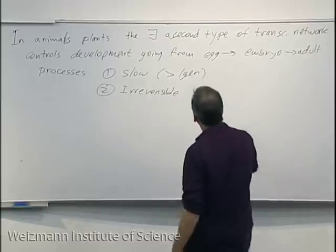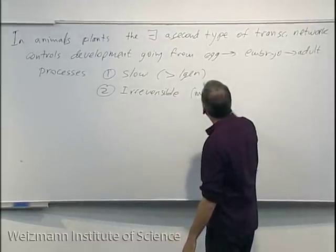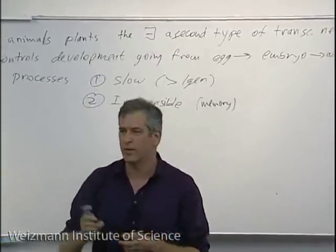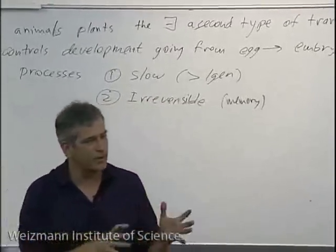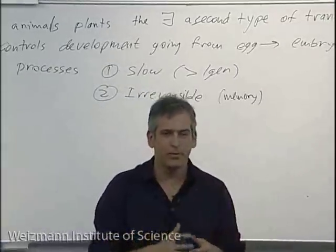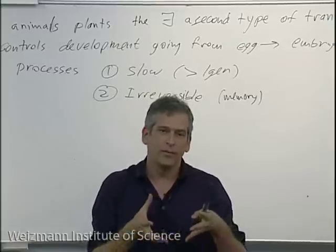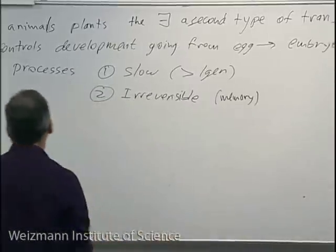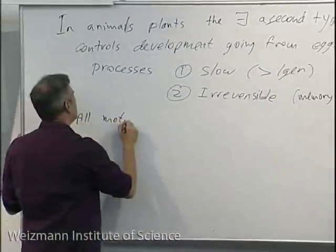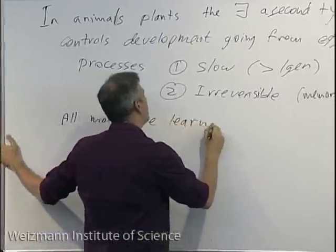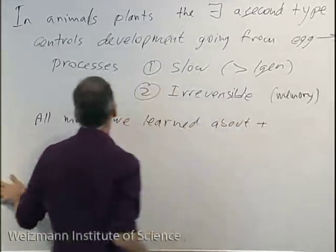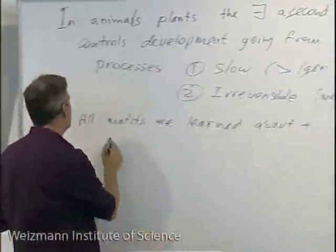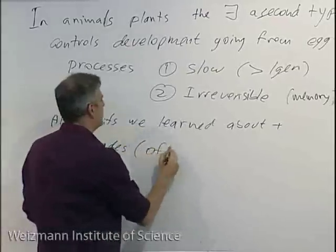Which proteins to express is governed largely by developmental transcription networks. A muscle cell starts developing and must remember 'I'm a muscle' across many cell generations — that's memory — and it's slow and irreversible. These networks need memory. When you look at developmental transcription networks in fruit flies, worms, mice, humans, and even some bacteria undergoing complicated developmental processes, you find additional network motifs beyond those we learned.